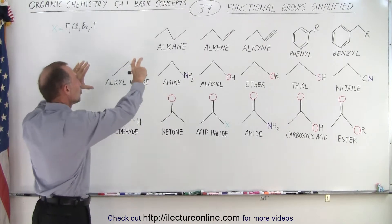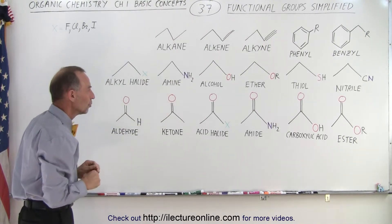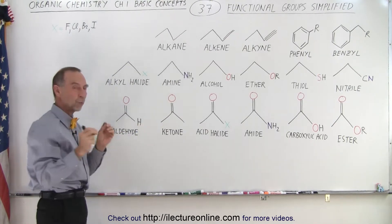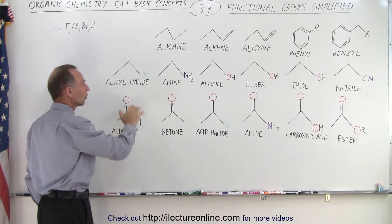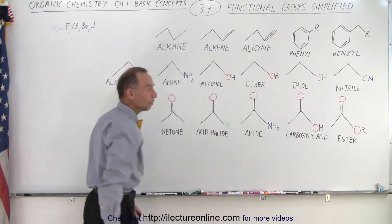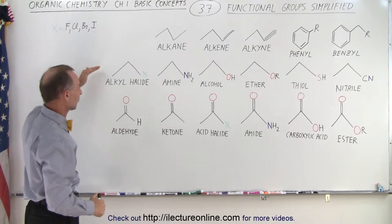Now they're divided into two main categories. Notice the one on the bottom, they all have one thing in common: they have an oxygen with a double bond attached to the chain. You don't see that in this group here at all. So let's take a look at this group here first.